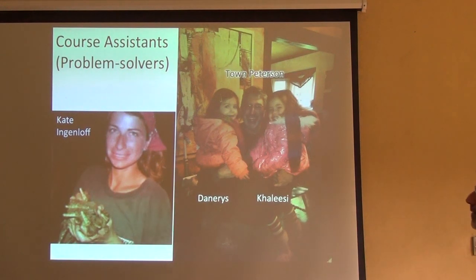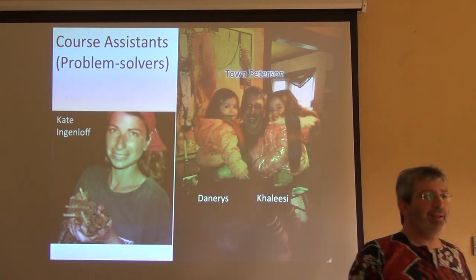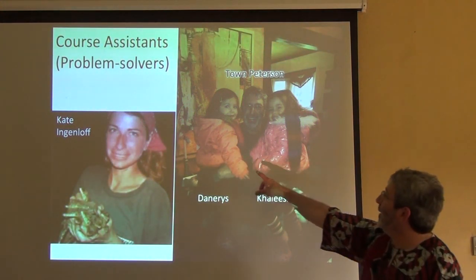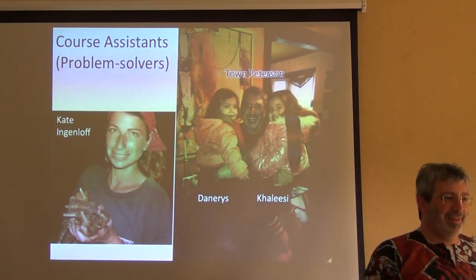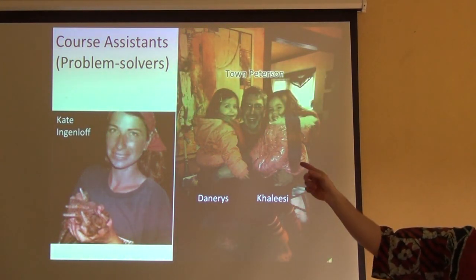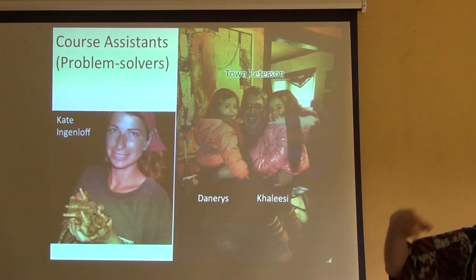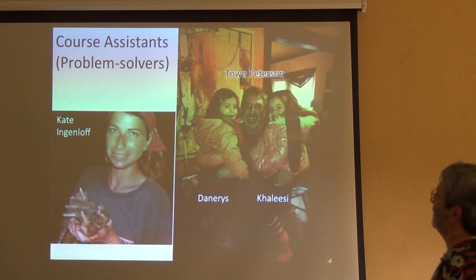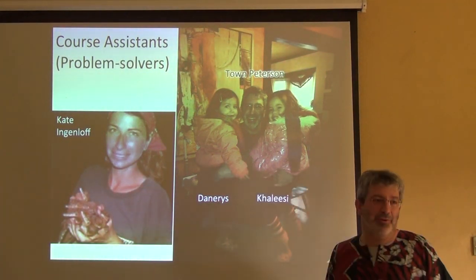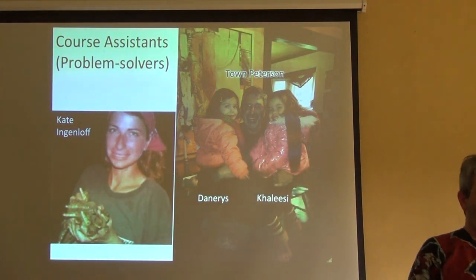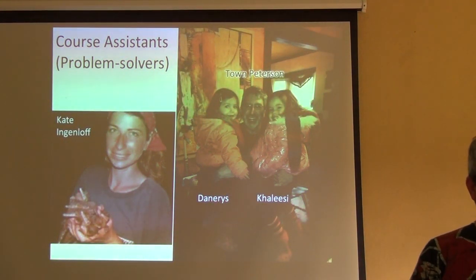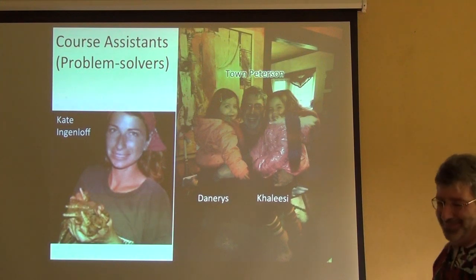Whenever you have trouble, whenever you need anything, just come to Kate and me and we'll fix it. And most importantly, those are my granddaughters, Daenerys and Kalesi — those are the new pictures. She's three and she's about to turn two. This course was planned for mid-January because her birthday is on February 4th, so I have to be back by then. Thank you.